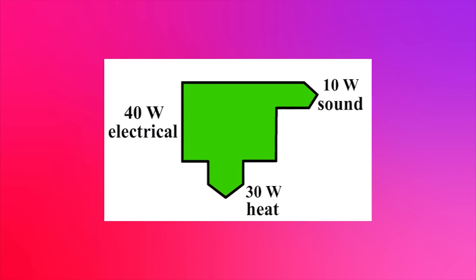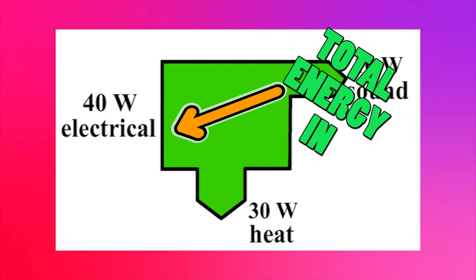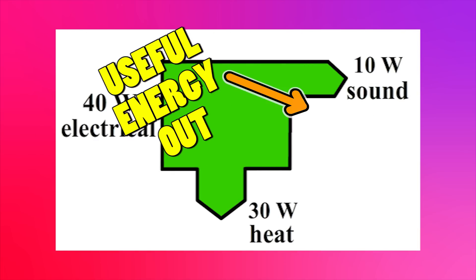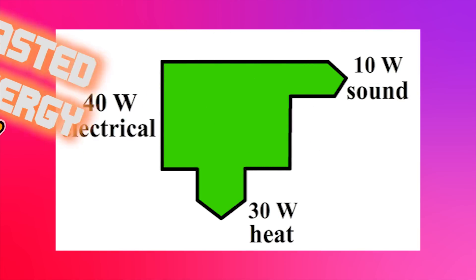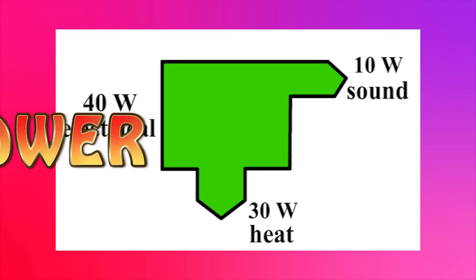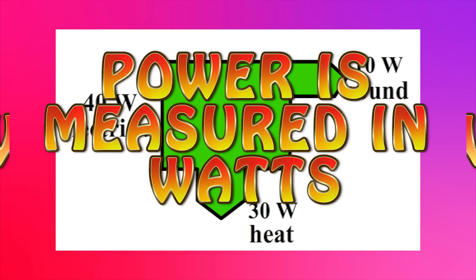Example 2. Here's the Sankey diagram for a radio. Don't forget that Sankey diagrams can also be shown using the units of power — joules per second.